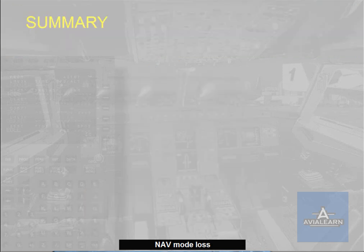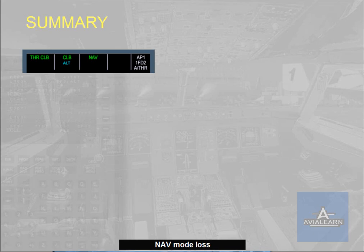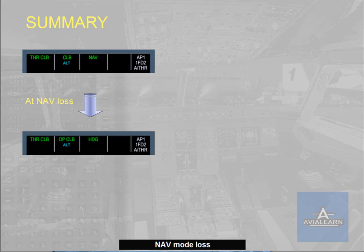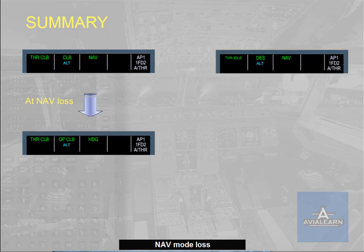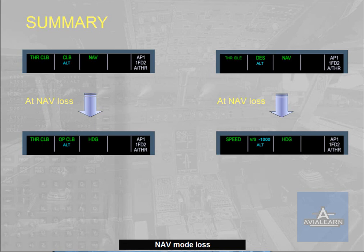We have seen the loss of navigation mode in climb. On the right side of the screen, you can review a similar scenario in descent. When heading mode is engaged, which causes the loss of navigation mode, descent mode reverts to vertical speed mode with the current vertical speed value, and speed mode engages on autothrust. The aircraft pitch behaviour is unchanged. Note: the loss of navigation mode may also be caused by a flight plan discontinuity.